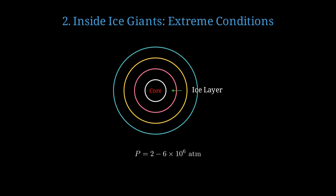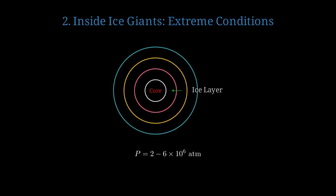The pressure in these regions reaches 2 to 6 million atmospheres, which is millions of times stronger than Earth's surface pressure. The temperature is around 5,000 Kelvin, or nearly 4,700 degrees Celsius. That's hotter than the surface of some stars.